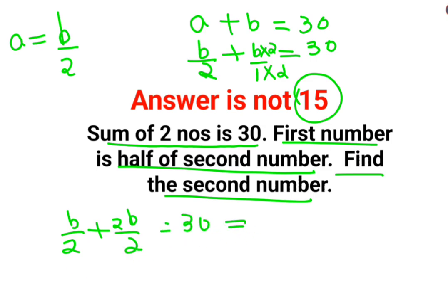Now since the denominators are the same, you can directly add the numerators, which is B plus 2B is 3B/2 equals 30.